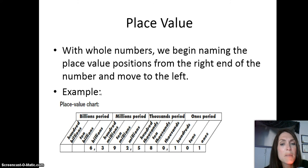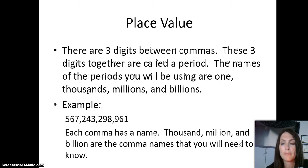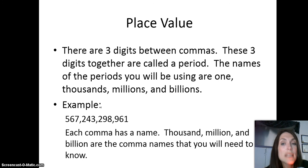You'll also notice that above those place value position labels, you'll see something labeled periods: ones period, thousands period, millions period, and billions period. This is important because whenever we want to place commas in large whole numbers, we need to know that there are three digits between the commas. These three digits together are called a period. The names of those periods you'll be using are ones, thousands, millions, and billions.